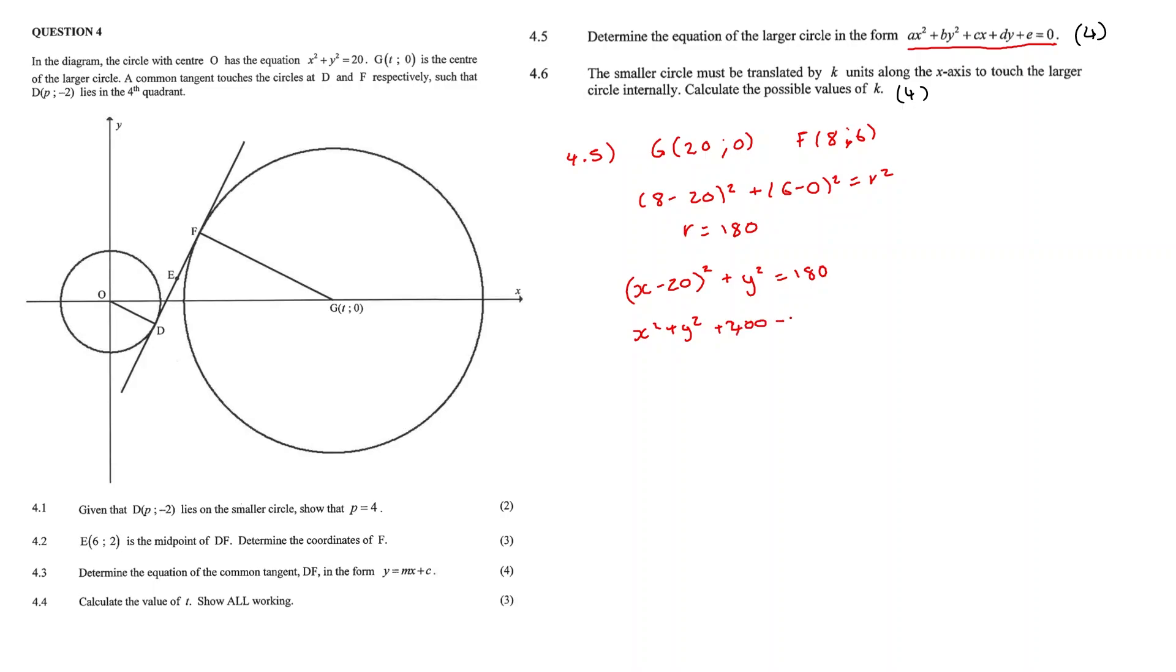we just need to distribute this square into the bracket. So we get x squared plus y squared plus 400 minus 40x is equal to 180. And if we move our 180 across, we get x squared plus y squared plus 220 minus 40x is equal to 0.